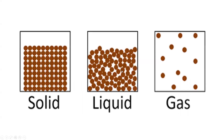The space between particles is called inter-molecular space. In gases, the inter-molecular space is much greater than in liquids and solids. Because gas particles have large inter-molecular space, they can collide with each other and with the walls of their container.